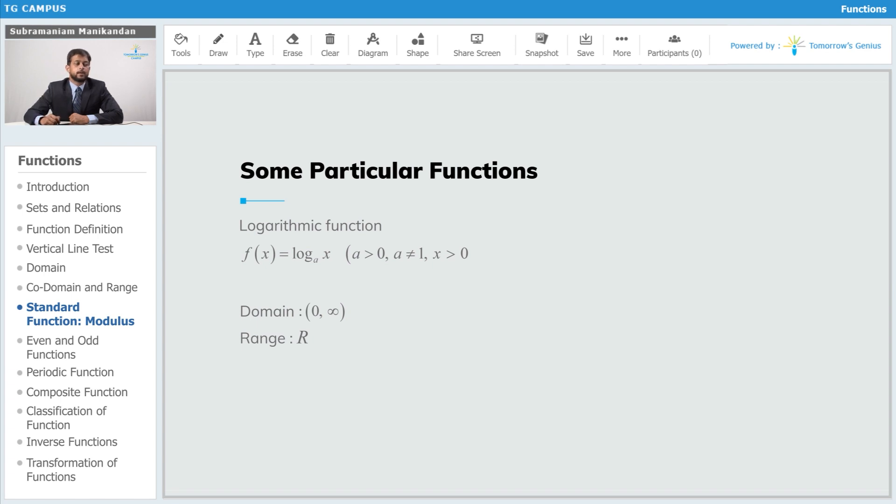We know that the logarithm of zero or negative numbers is not defined. And therefore, the domain of the logarithmic function is between zero and infinity. That is, all positive real numbers only, including 1. x can be equal to 1. The range is all real numbers.